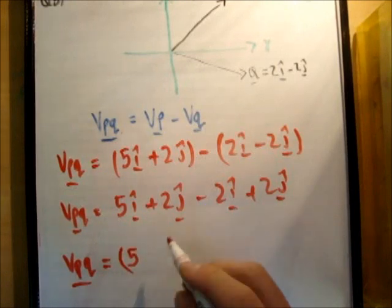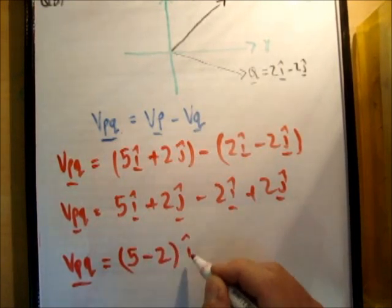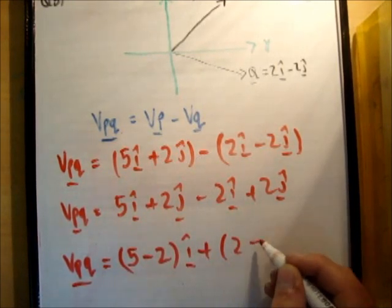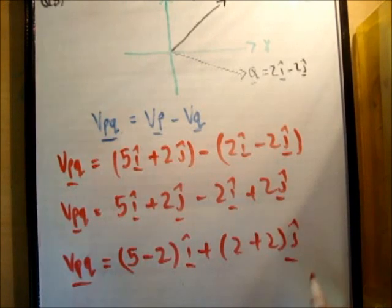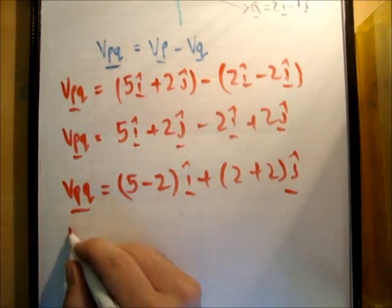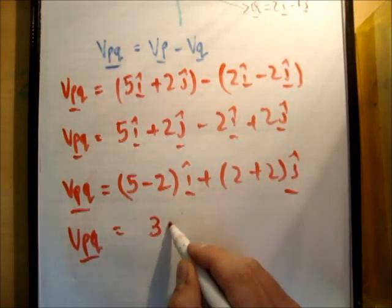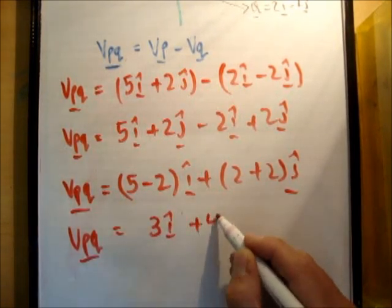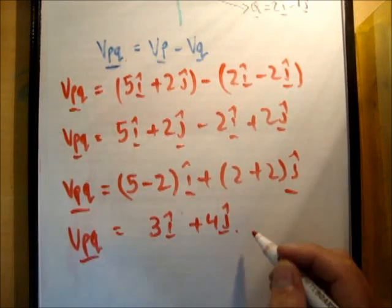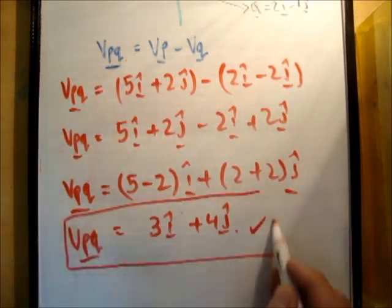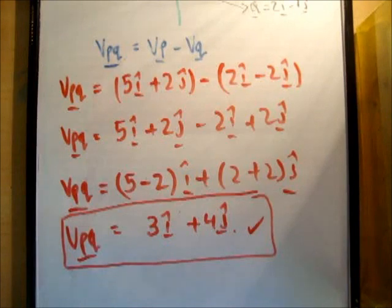So V, P, Q is equal to 5 minus 2I hat plus 2 plus 2J hat. And your overall V, P, Q vector, the velocity of P relative to Q is equal to 3I hat plus 4J hat. Which is correct.